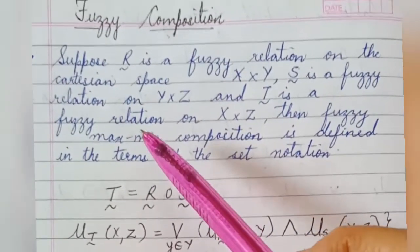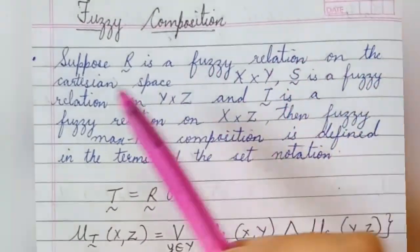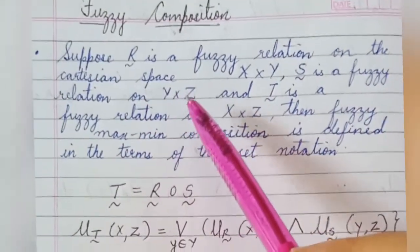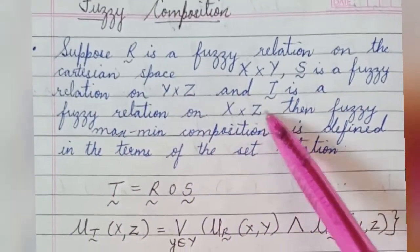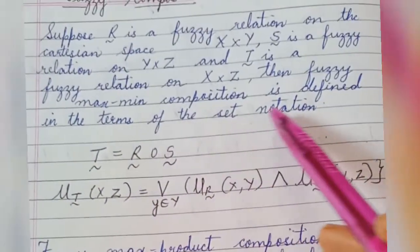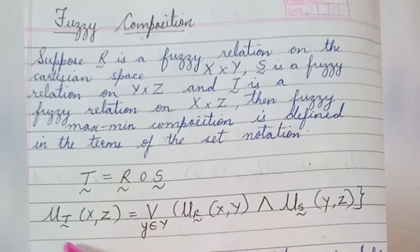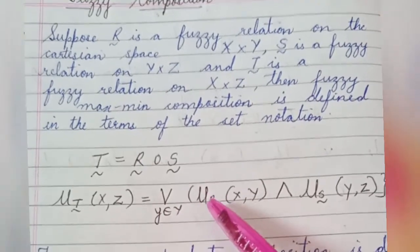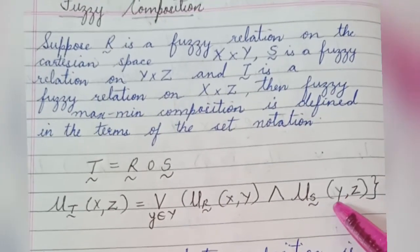The formal definition of max-min composition: Suppose R is a fuzzy relation on the Cartesian space X × Y, S is a fuzzy relation on Y × Z, and T is a fuzzy relation on X × Z. Then the fuzzy max-min composition is defined in set notation as T = R ∘ S, given by mu_T(x, z) = max over y in Y of [min(mu_R(x, y), mu_S(y, z))].